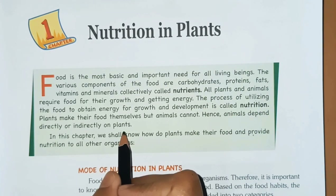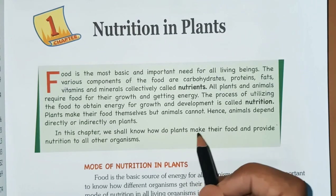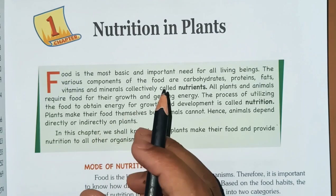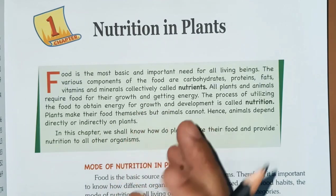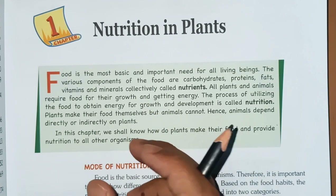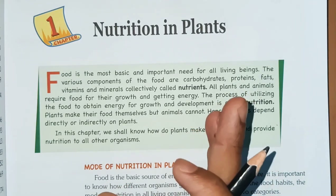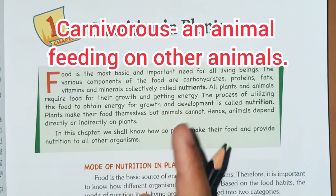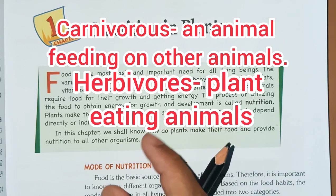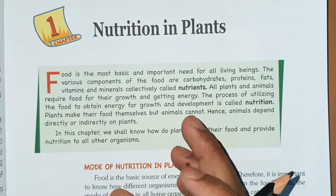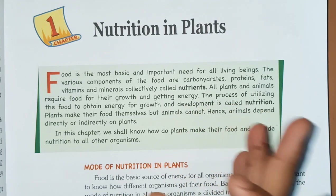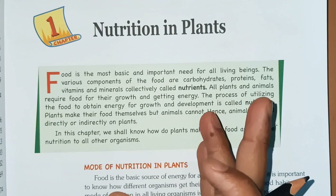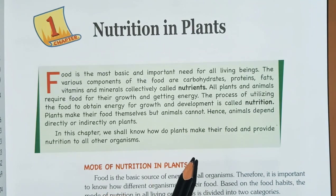Animals are also indirectly dependent on plants. They do not eat plants directly — for example, carnivores like lion and tiger feed on herbivores (plant eaters) and get their nutrition. Lions and tigers feed on deer, cows, and buffaloes for their nutrition.